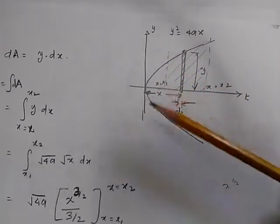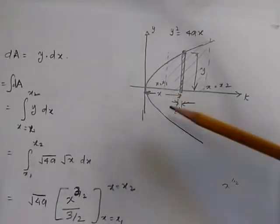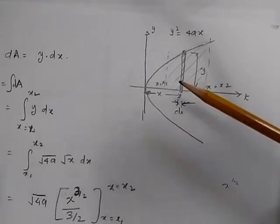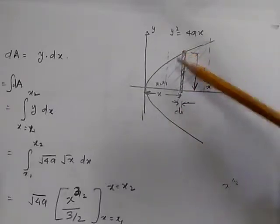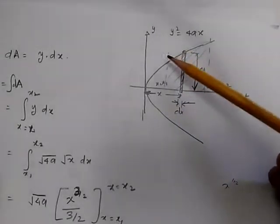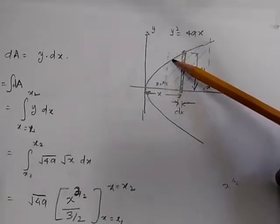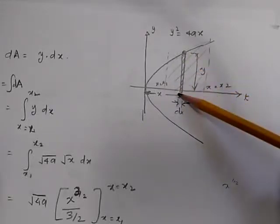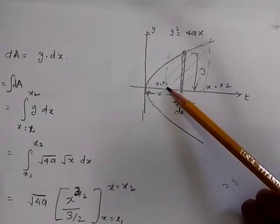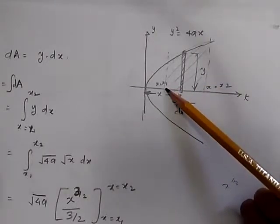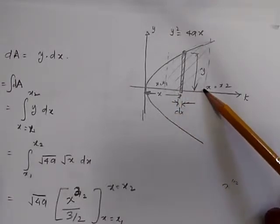We will make use of integration and in the process learn about the physical significance of integration. Let's say we don't know any calculus or integration, and we still need to find an approximate area. We can divide this section into many vertical strips — from x1 to x2, x2 to x3, x3 to x4, x5 to x6, and so on.